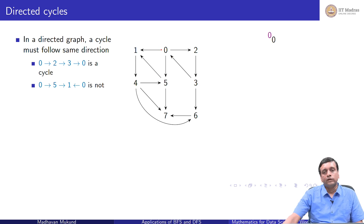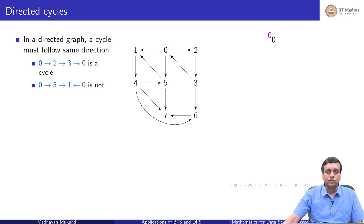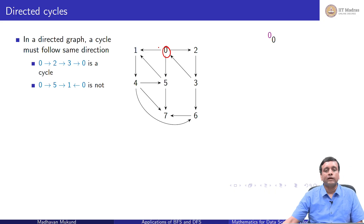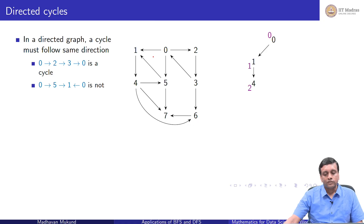We can do a DFS and use DFS numbering. It is exactly the same — there is no difference in DFS whether it is directed or undirected. We follow the same protocol for pre and post numbers. Starting at 0, we systematically explore its neighbors. We enter 0 with pre number 0, enter its first neighbor 1 with pre number 1, and then enter 4 with pre number 2.